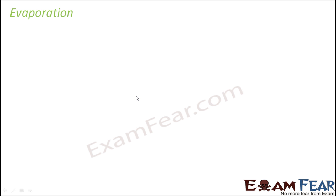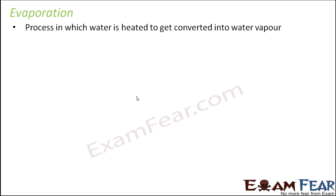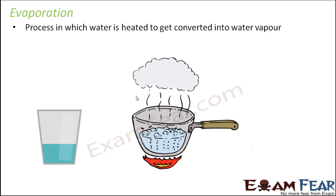The next process we will talk about is evaporation. Evaporation is a process in which water is heated to get converted into water vapor. Water is normally in liquid form. If you take it in a pan, put it on the stove and start heating, you gradually see that after some time the water starts boiling and the liquid water starts decreasing in quantity. That is because the liquid water is getting converted into water vapor. This process is known as evaporation. In order for evaporation to take place, we need heat — an increase in temperature — because only that can convert liquid to vapor.